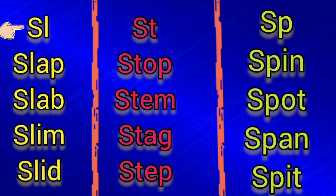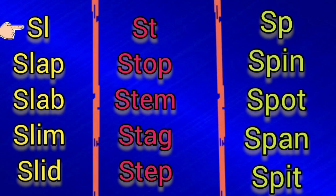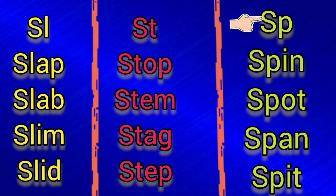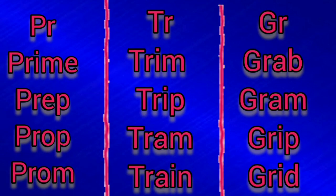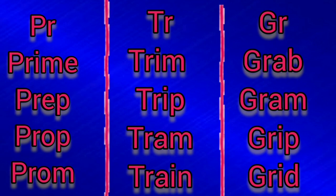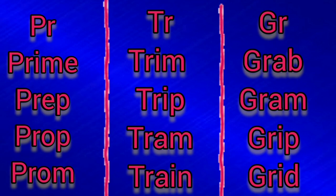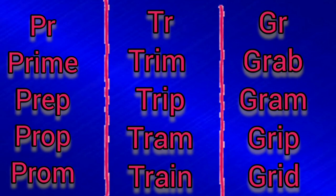SL — slap, slab, slim, slid. ST — stop, stem, step. SP — spin, spot, span, spit. PR — prime, prep, prop, prom. TR — trim, trip, tram, train. GR — grab, gram, grip, grid.